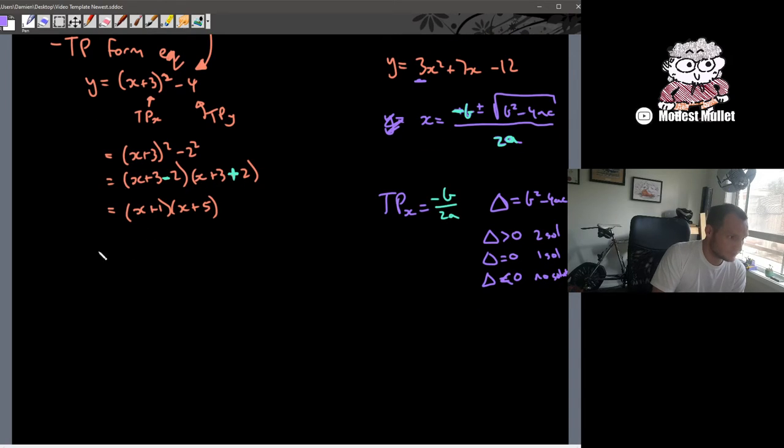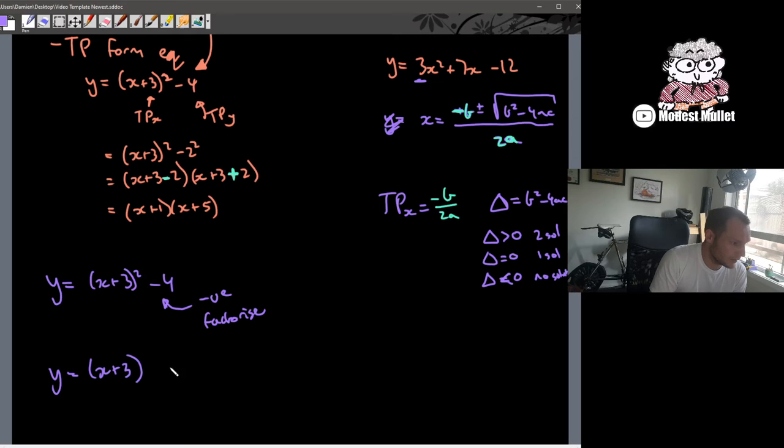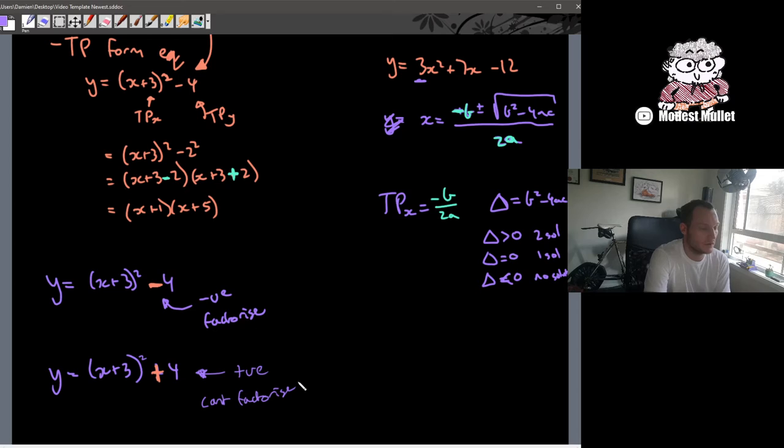The other thing I want to say about completing the square is it also tells us when there's a hint when there's no solution. So if we get y equals x plus 3 all squared minus 4, if that's negative, then we can factorize. If we get y equals x plus 3 all squared plus 4, we have that positive, we can't use difference of perfect squares. We can't use this here. Because that's positive, we can't factorize further. So just keep that in mind for completing the square.